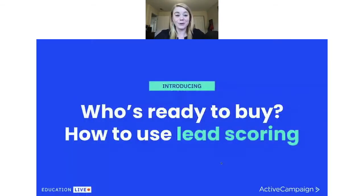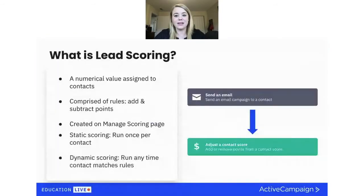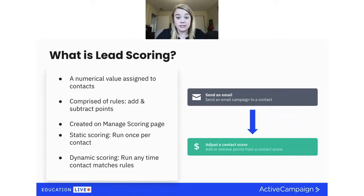We're going to talk about how to use lead scoring — that's what we're here for today. First up: what is lead scoring? A lead score is a numerical value that you assign to your contacts. A single score can be comprised of one or more rules that both add and subtract points from any contact that meets your conditions.